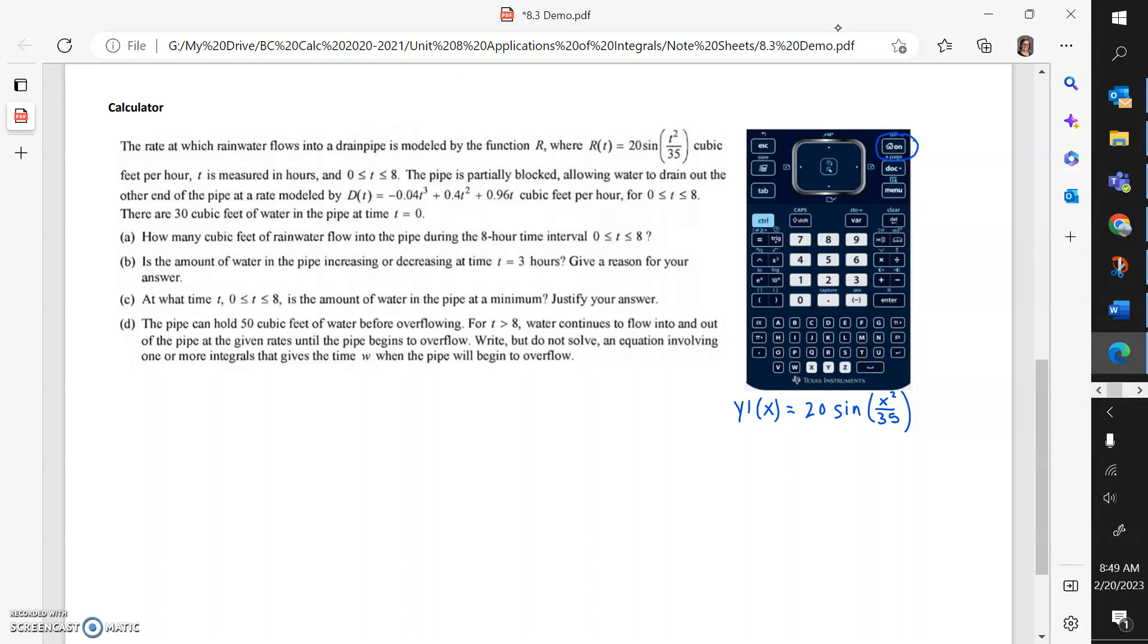T is measured in hours and T is from zero to eight. So while you're on your graphing screen, you can hit menu, window, zoom, and you can set your X min to zero and your X max to eight.